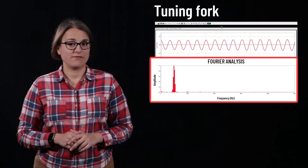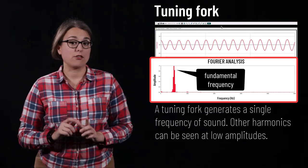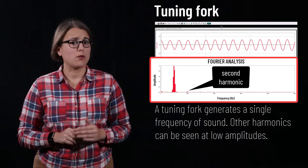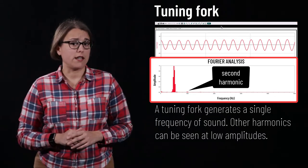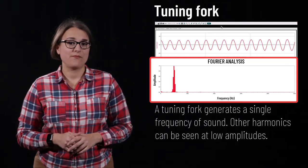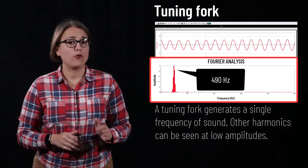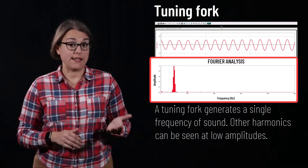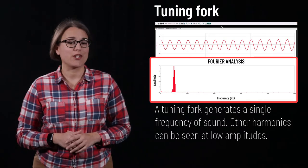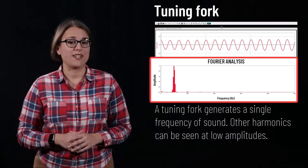First, let's look at the Fourier analysis of the sound made by a tuning fork. The tuning fork is built to produce a single frequency of sound, although other harmonics can be created, just as a string can support multiple standing wave harmonics. The Fourier analysis shows a single predominant peak at 490 Hz — the same as the frequency stamped on the side of the tuning fork — with a few other harmonics existing at greatly reduced amplitudes.